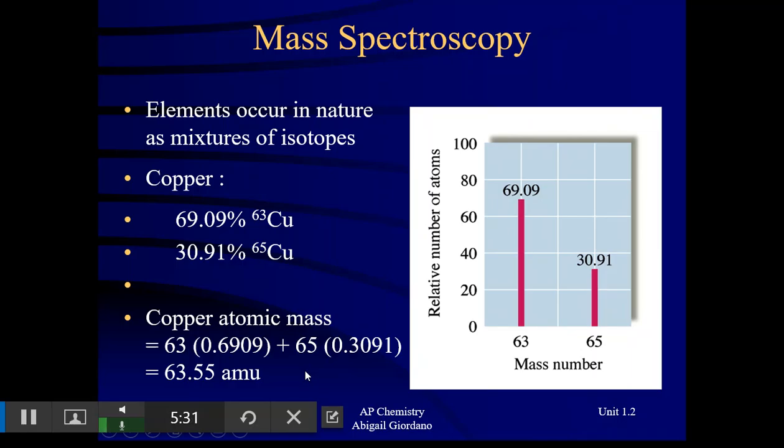And you get 63.55 AMU. And if you look at your periodic table, you'll see that that is the atomic mass of copper. It's actually an average atomic mass. These atomic masses off the periodic table are weighted averages, just like your grades in class are weighted averages.